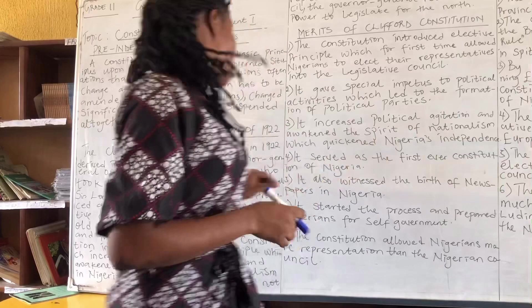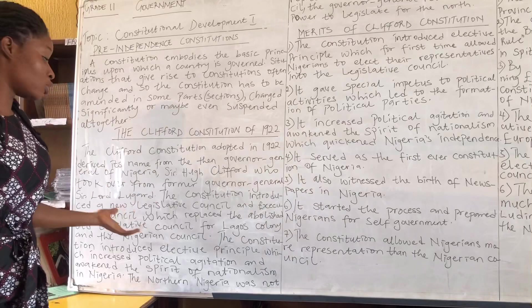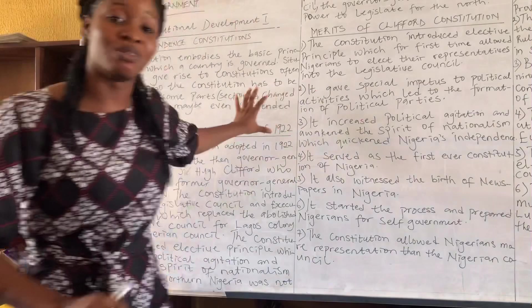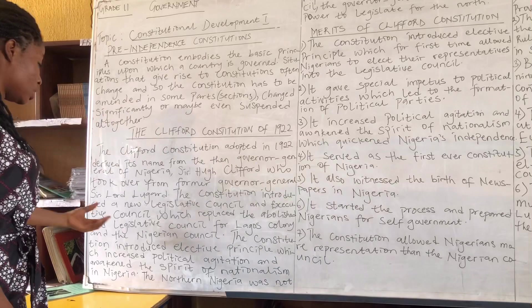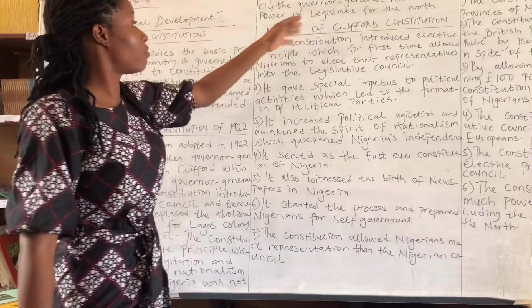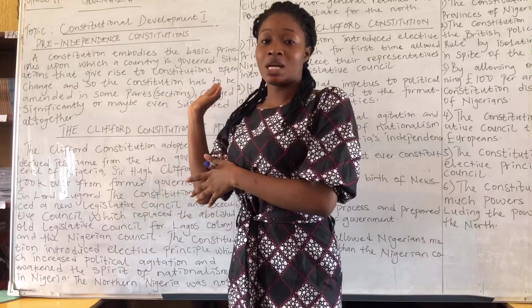With the introduction of the Clifford Constitution in 1922, we had the legislative council and executive council properly in place. What was known as the Nigerian Council was abolished and replaced with this constitution. The constitution introduced an elective principle which increased political education and awakened the spirit of nationalism in Nigeria. However, Northern Nigeria was not represented in the new legislative council.